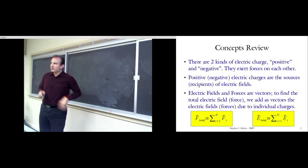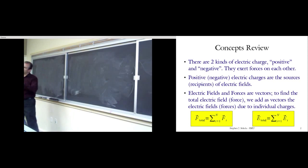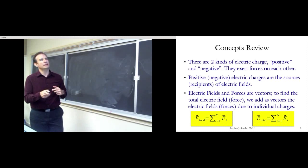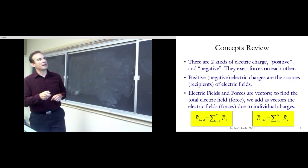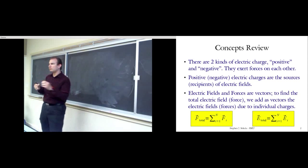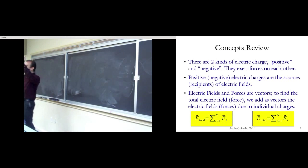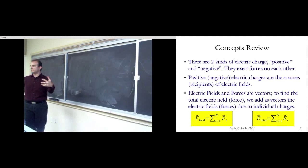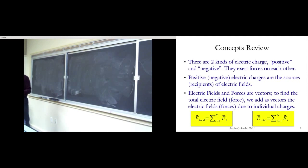So let's go over the concepts again that we've kind of touched on so far. These are the core ideas we've walked away with — it all fits on a slot. There are two kinds of electric charge: positive and negative. They exert forces on each other. Positive and negative electric charges are the sources or recipients of electric fields. By convention, electric fields emanate from positive charges and go into negative charges.